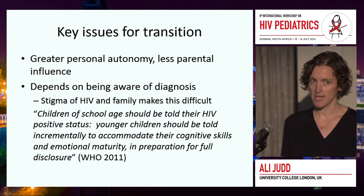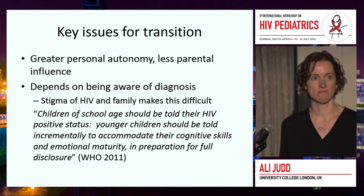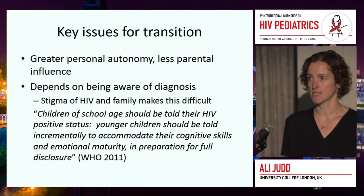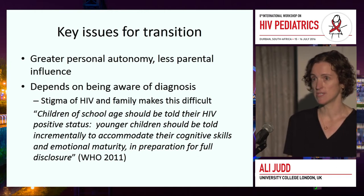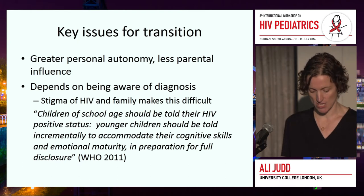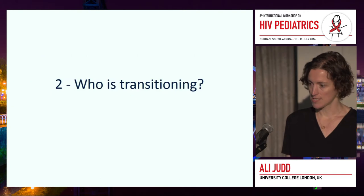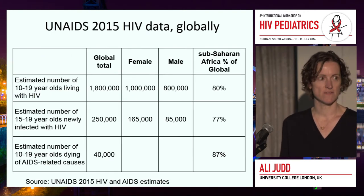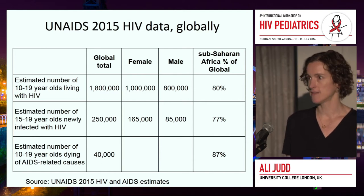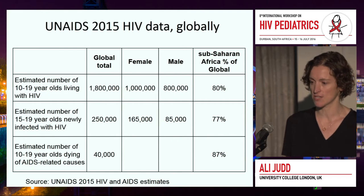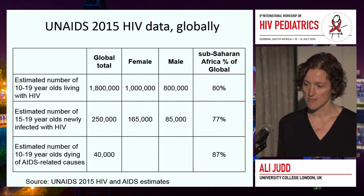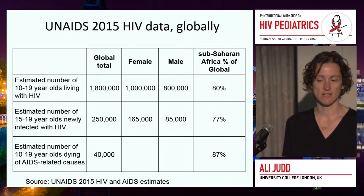This is complicated with the stigma of HIV and the family nature of perinatal HIV. In the UK, we are now recommending that children with HIV are disclosed to about their status in primary school years, ideally by the age of nine, and WHO guidelines support this. So, who is transitioning? These are UNAIDS 2015 HIV data globally, for adolescents with perinatal HIV and horizontal HIV. The estimated number of 10 to 19-year-olds living with HIV was just under 2 million globally.